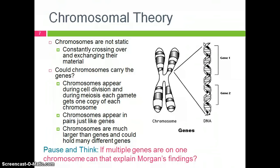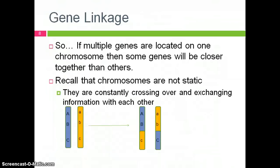If we consider the fact that multiple genes are located on one chromosome, then we also have to realize that some genes will be closer together than others. And because chromosomes are frequently exchanging information with other chromosomes, the chances of two genes crossing over together is higher if the genes are closer together on the chromosome. In this example, A and B are much closer together than C on the chromosome. So, if a crossover event were to occur, there is a good chance that it would occur in between B and C, resulting in capital A and capital B being inherited together on the same chromosome, and capital C being exchanged for the lowercase c.